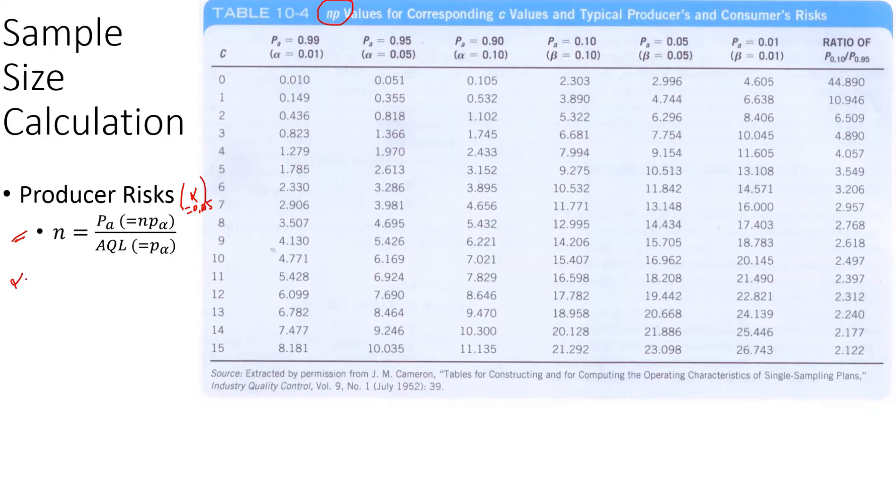Imagine that we use the alpha value equal to 0.05, and then the PA. Now for C equals 1, and assume that the producer acceptance quality is 1.2%. Now for C value 1, we can see that the 95% alpha is this value. So if we extract from this table, N equals 0.355 divided by 1.2%, that means 0.012, which equals, if we calculate it, that's going to be about 30.